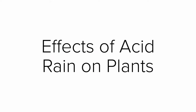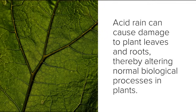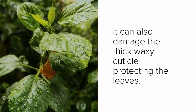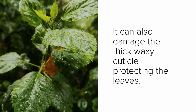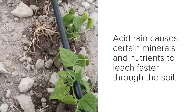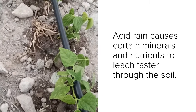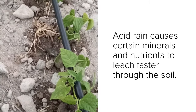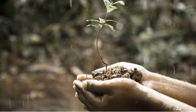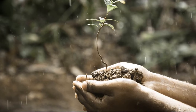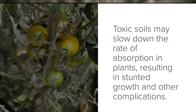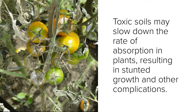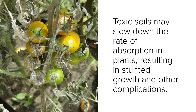Effects of acid rain on plants: acid rain can cause damage to plant leaves and roots, altering normal biological processes. It can also damage the thick waxy cuticle protecting leaves, leaving them exposed to infections and destructive insects. Acid rain causes minerals and nutrients to leach faster through the soil, preventing plants from getting the food they need to grow. Without key nutrients like calcium and magnesium, plants are more likely to die. Acid rain also causes aluminum to leach through the soil, causing aluminum toxicity, which can result in stunted growth. Seeds can also fail to germinate in soils contaminated by acid rain.